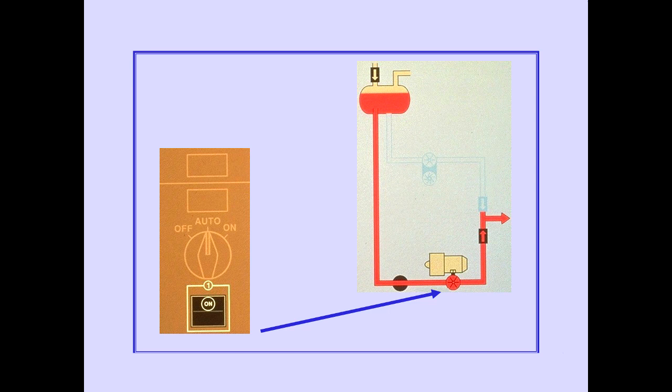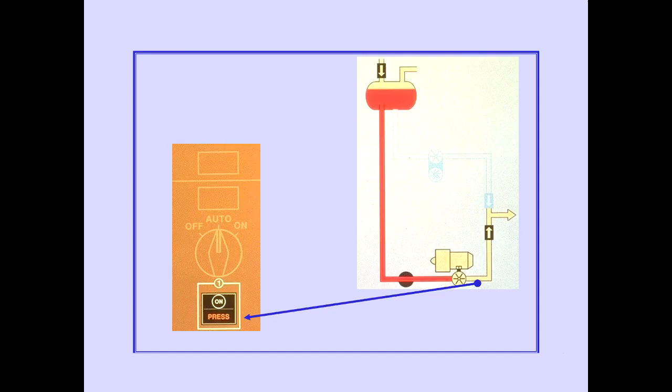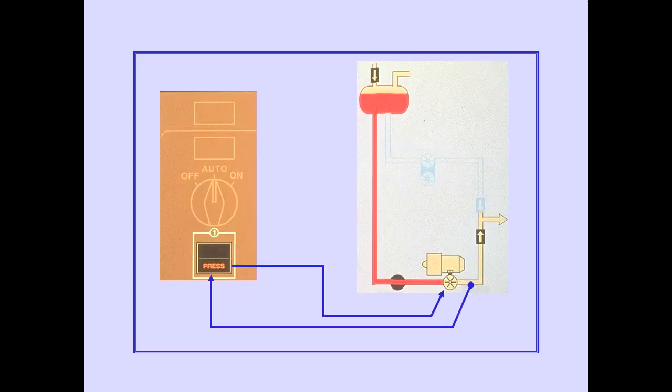The engine pump produces hydraulic pressure when the engine rotates. The pump low pressure light illuminates when the engine pump pressure is low. With the engine pump switch off, the system is depressurized and the pump low pressure light illuminates.